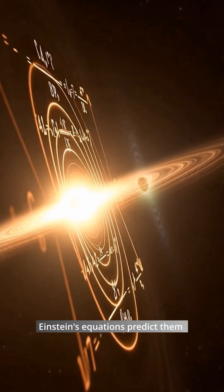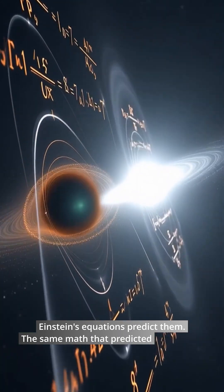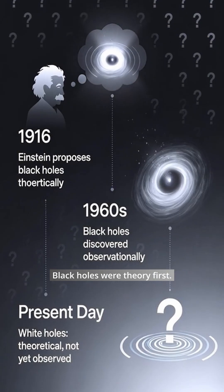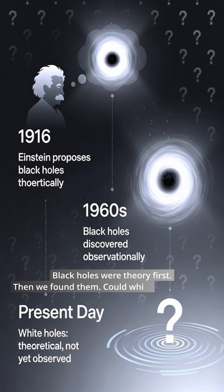Einstein's equations predict them. The same math that predicted black holes. Black holes were theory first. Then we found them. Could white holes be next?